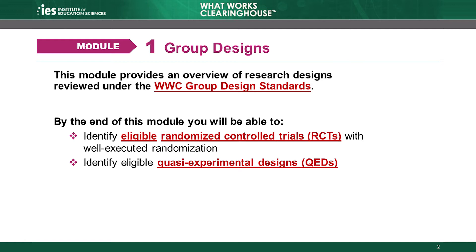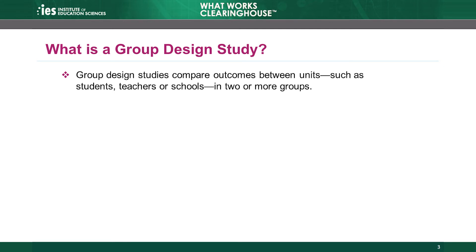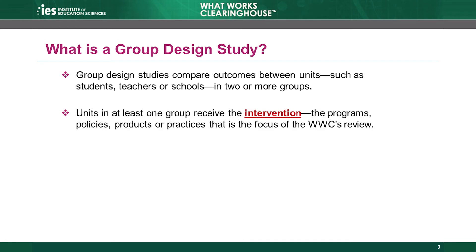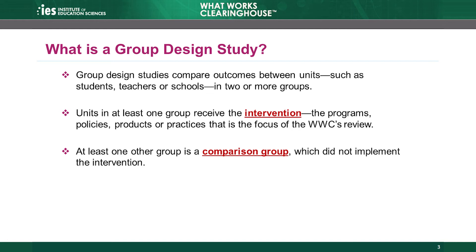To understand the WWC group design standards, we'll need to talk about what counts as an eligible randomized controlled trial, as in a well-executed randomization, and as an eligible quasi-experimental design study. Group design studies measure the effectiveness of an intervention by comparing outcomes for study units, which might be students, teachers, or schools, between two or more groups. Units in at least one group must receive the intervention, which is the programs, policies, products, and practices that is the focus of the WWC's review. The intervention might be a math curriculum, an after-school program, the use of educational software, or an instructional practice for teaching reading. In addition to an intervention group, the study must also include at least one comparison group that did not implement the intervention.